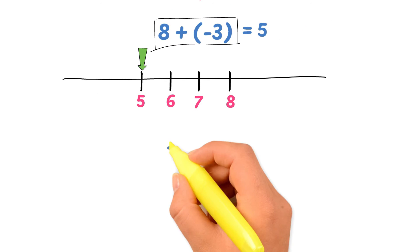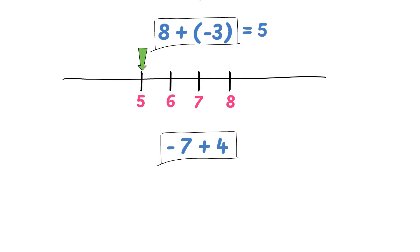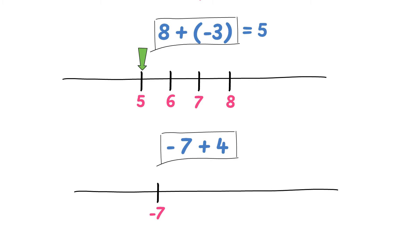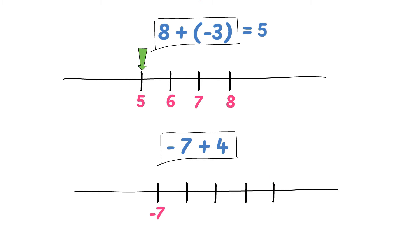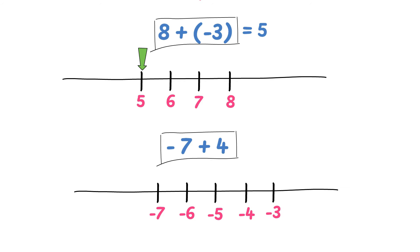Now what is negative 7 plus 4? Draw the number line and write here the first number which is negative 7. The second integer is positive 4, so we have to travel 4 spaces to the right: 1, 2, 3, and 4. This lands on negative 6, negative 5, negative 4, and negative 3. So negative 7 plus 4 is equal to negative 3.